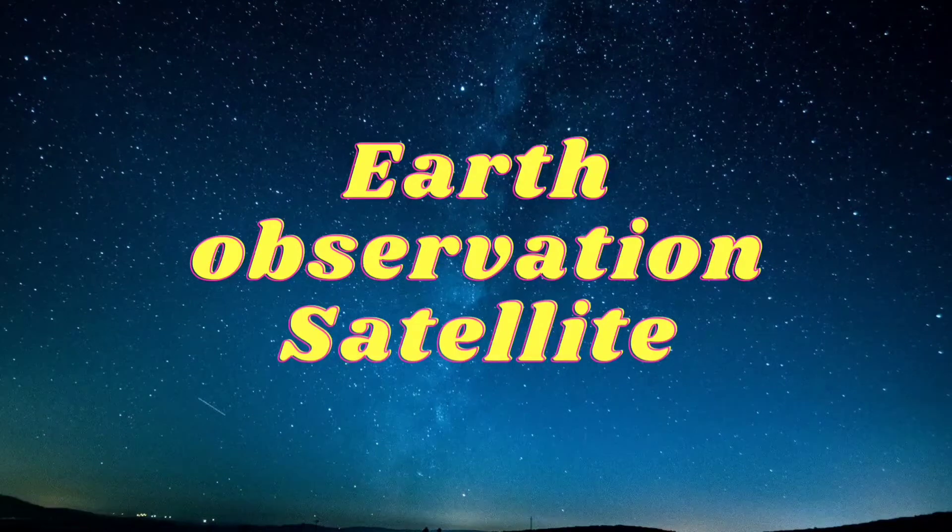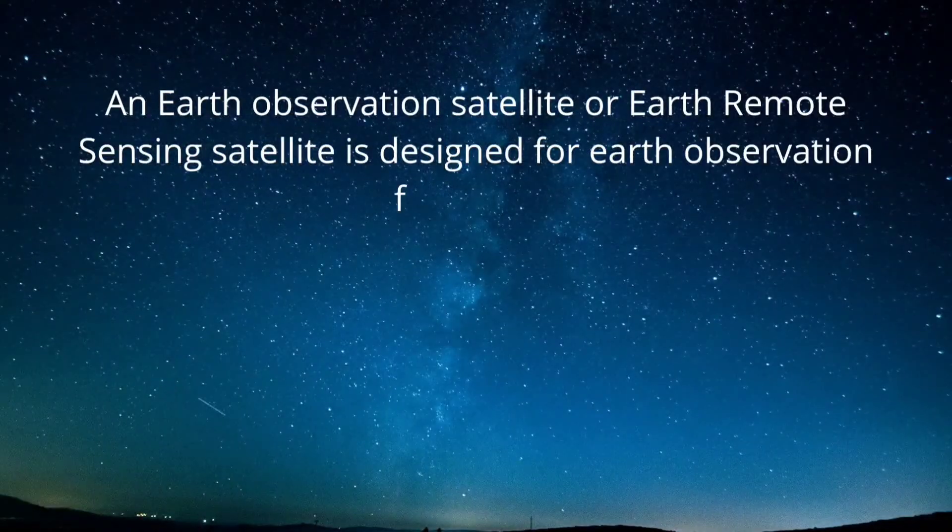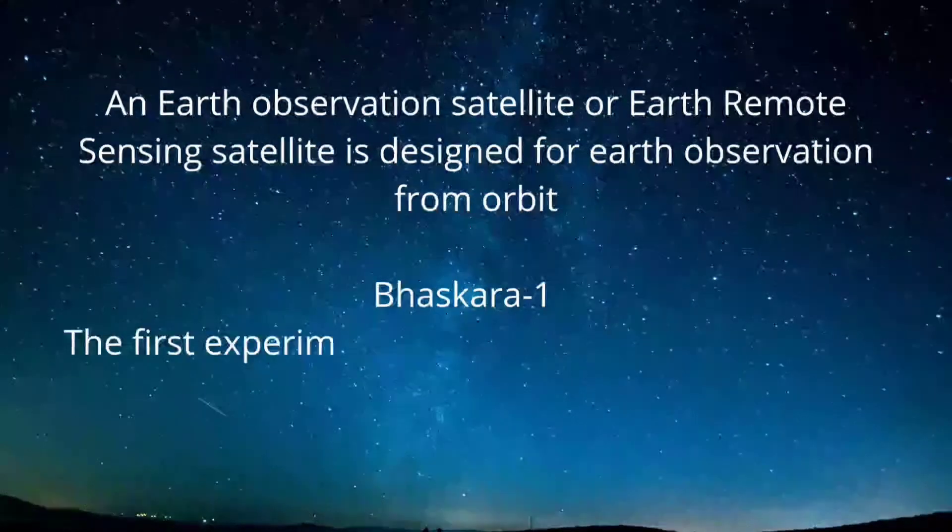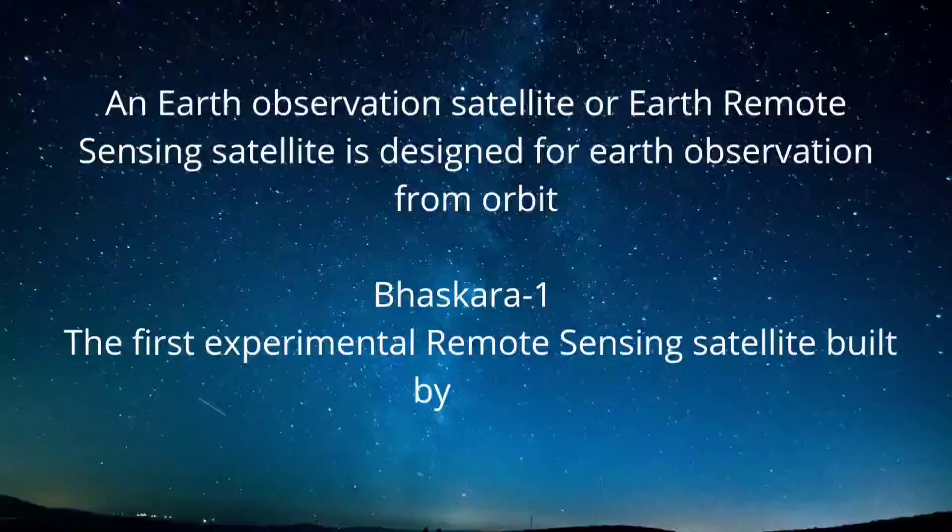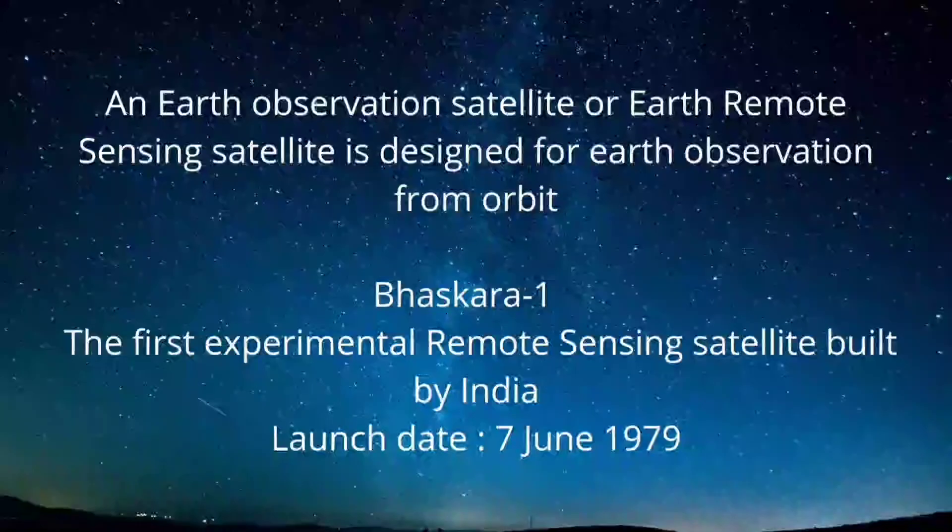An Earth Observation Satellite or Earth Remote Sensing Satellite is designed for Earth observation from orbit. Bhaskara 1 was the first experimental remote sensing satellite built by India, launched on 7 June 1979.